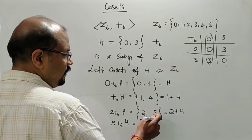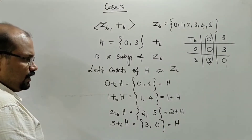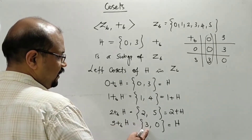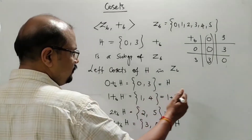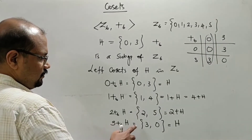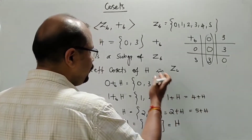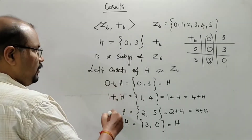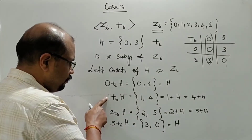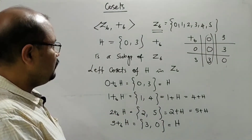Now, let H be a subgroup of Z6. We add 1 each time to get the coset elements. For element 4, we compute 4+H, adding 1 repeatedly. Similarly, 5+H gives another coset by adding 1. These are the distinct left cosets.